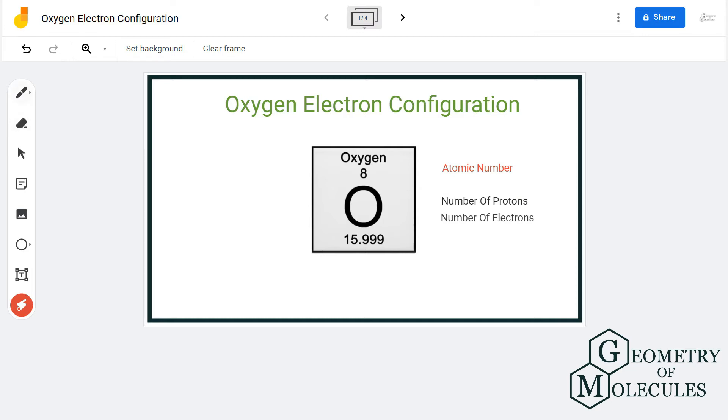So when we look at the periodic table, we can see that oxygen has an atomic number of eight, which means it has a total of eight protons as well as eight electrons.